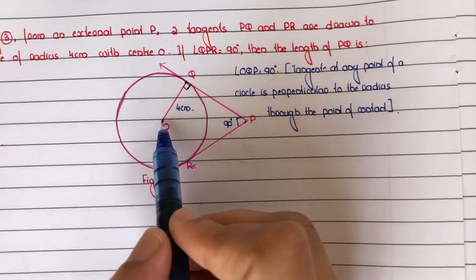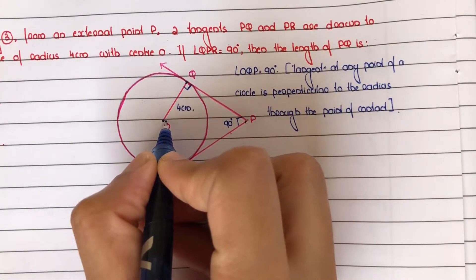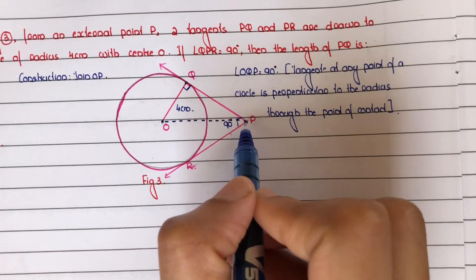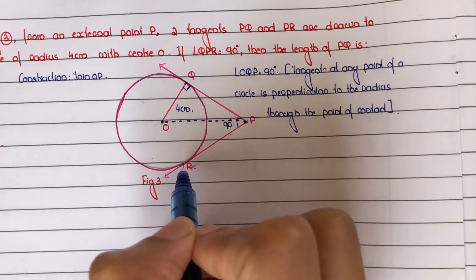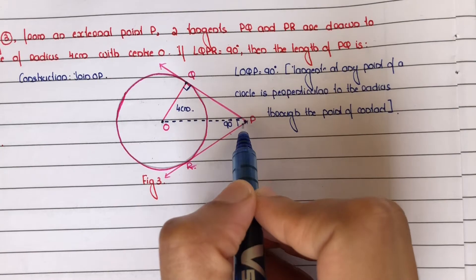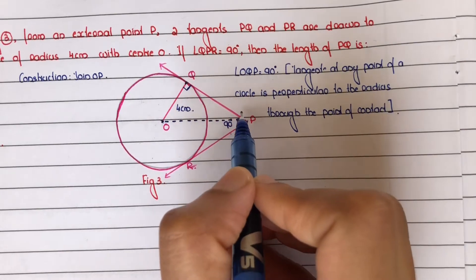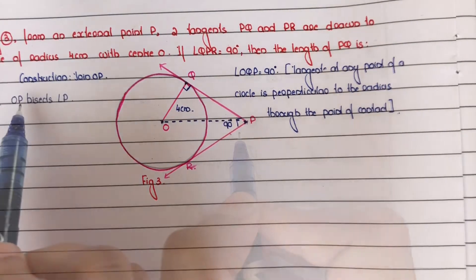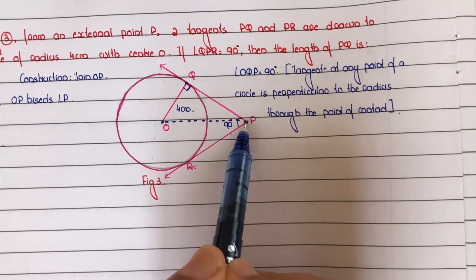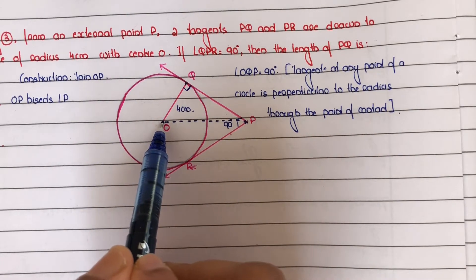Consider triangle OQP. Construction: join OP. O is the center of the circle and P is the external point through which the two tangents are drawn. So OP is a line. Angle P is bisected by OP — that is, OP bisects angle P — because two tangents are drawn from point P, so the line joining the center of the circle and point P bisects angle P.